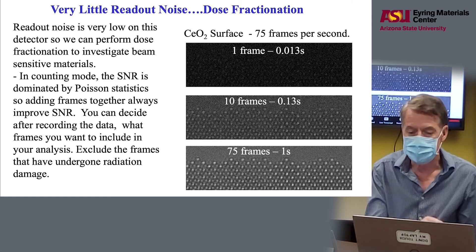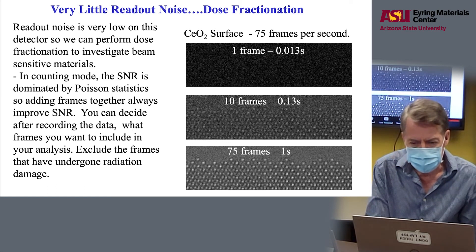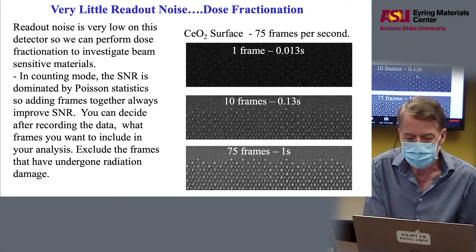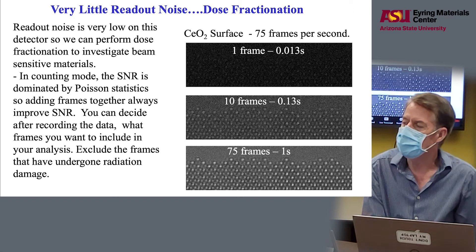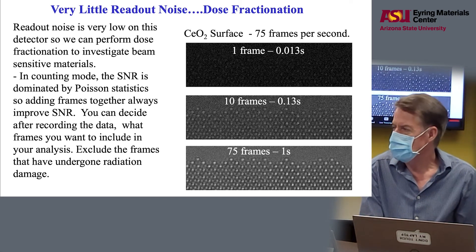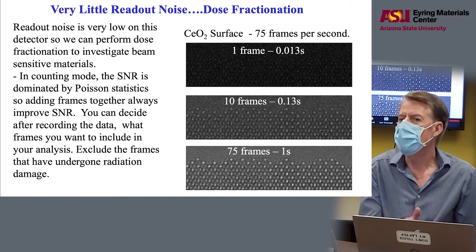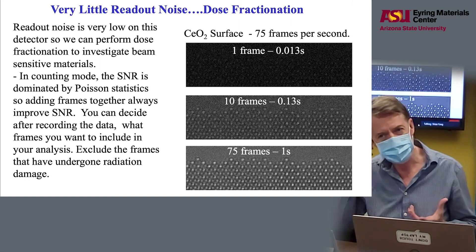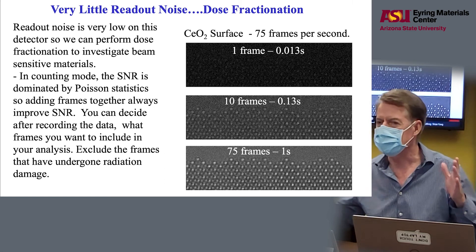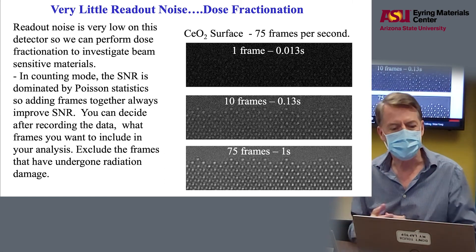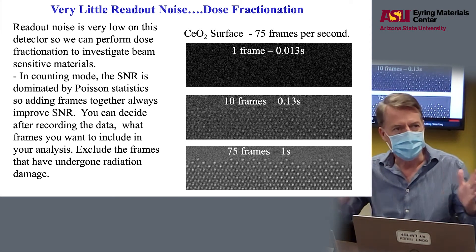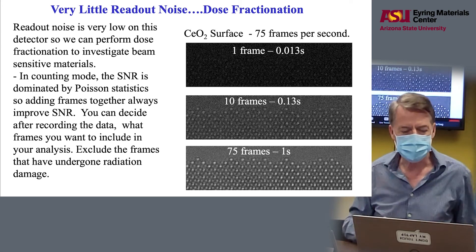This is one of the frames, and you might think that's way too noisy. So you can just take this and add 10 frames together, or add all 75 frames together to get a one-second exposure. The point is that because the noise is dominated by Poisson counting noise, you pay no penalty in terms of signal-to-noise when you do dose fractionation. With old detectors that have very large readout noise, if you divide your image into two half-second readouts, you get twice as much readout noise. The readout noise is negligible here, so we can play all sorts of games.